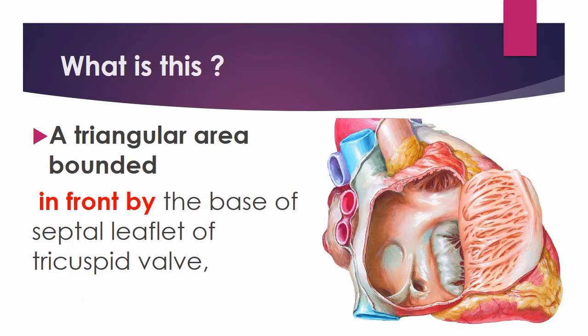Now, what is the triangle of Koch? As the scientist Walter Karl Koch discovered this triangle, it is named the Koch triangle. The boundaries of the Koch triangle are: anteriorly, we can identify the base of the septal leaflet, which is present anteriorly and forms the anterior boundary.